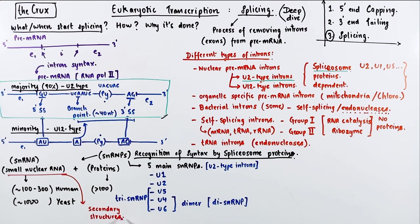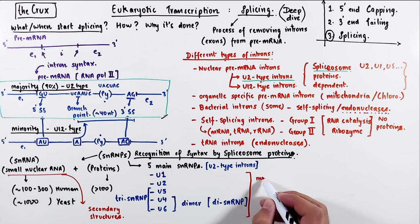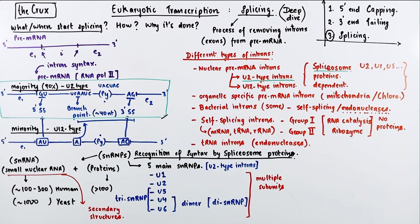One thing to keep in mind about the RNA part of these snRNPs is that these RNAs take on secondary structures, and each of these snRNPs have multiple subunits of proteins.